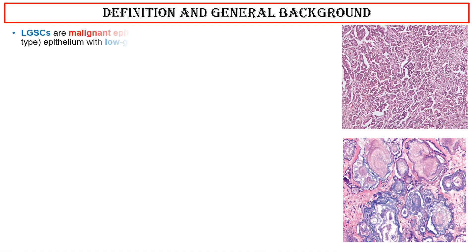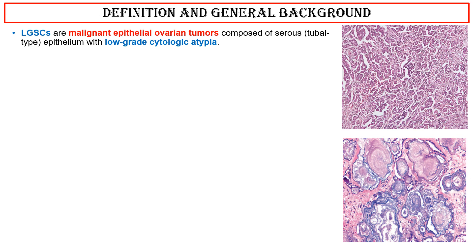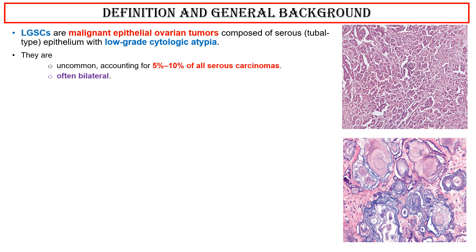Definition and General Background: Low-Grade Serous Carcinomas are malignant epithelial ovarian tumors composed of serous tubal-type epithelium with low-grade cytologic atypia. They are uncommon, accounting for 5% to 10% of all serous carcinomas, and often bilateral.